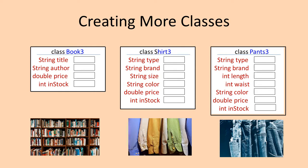I also need to write the code for the methods to process each field in each of the classes. One of the things that I noticed is that there is some duplication of fields. Every one of them has a field for price and in stock. To make it easier to keep track of the inventory and make it easier to order things, I also want to add another field for everything and call it item ID. I would also need to duplicate any code in each class that references these fields, such as methods for set item ID, get item ID, set price, get price, set in stock, and get in stock.